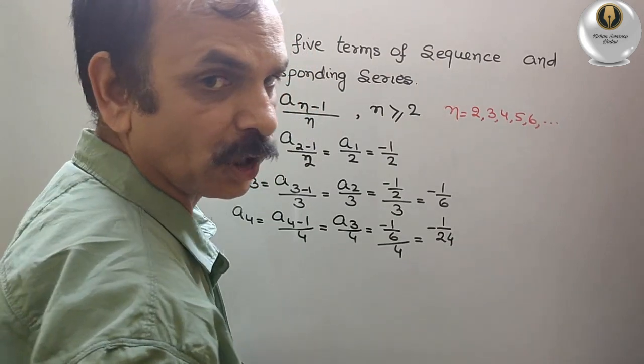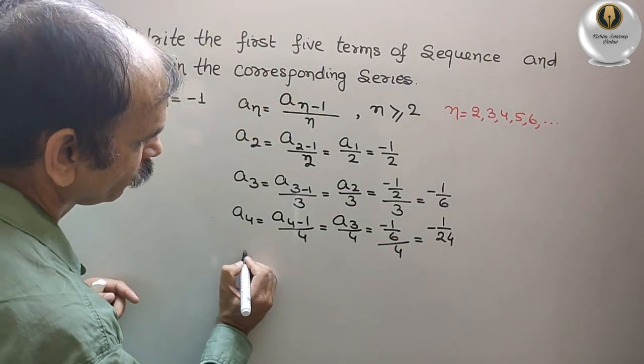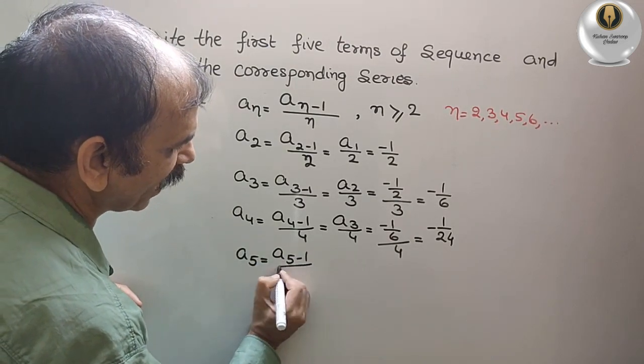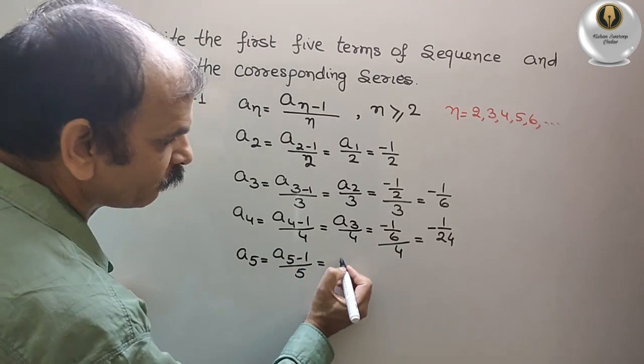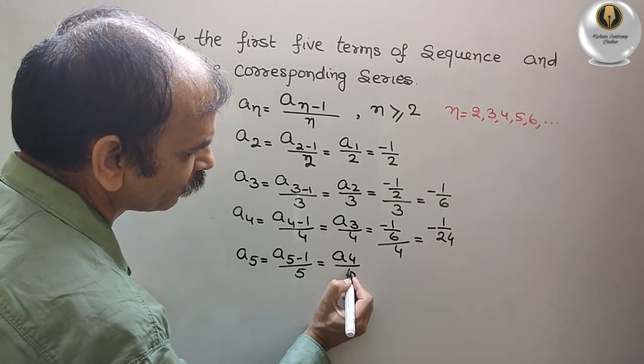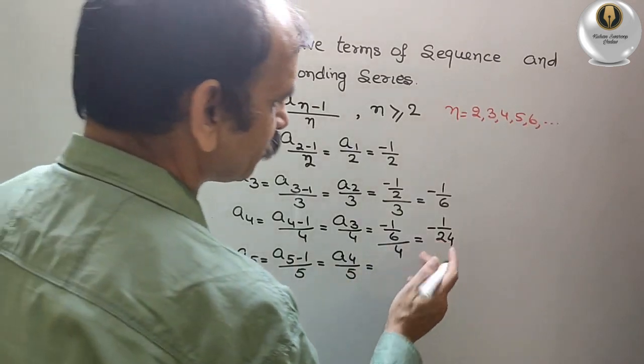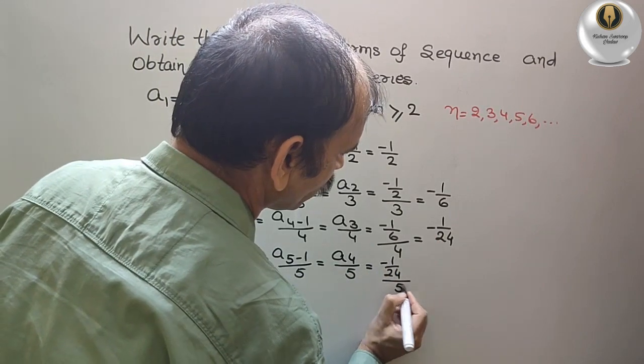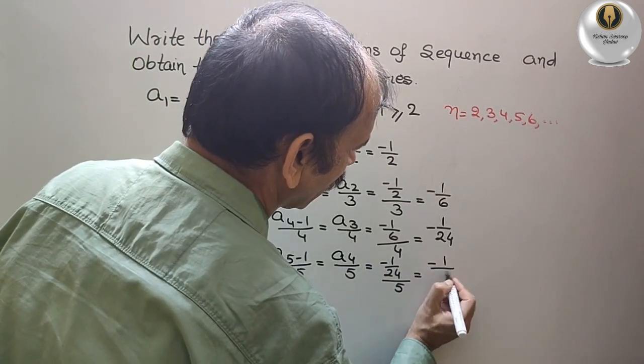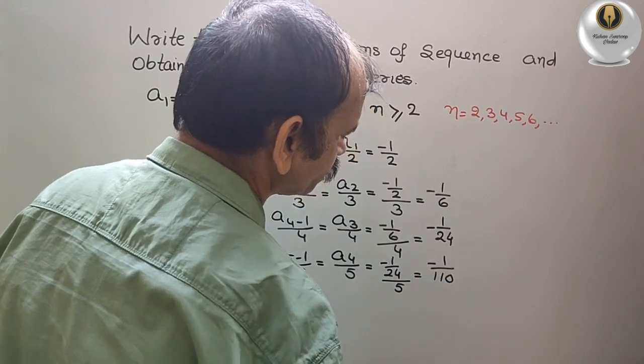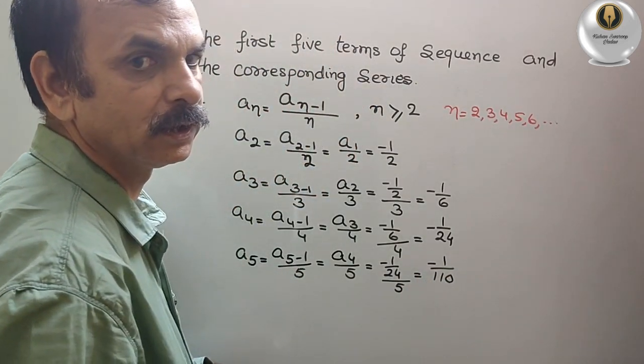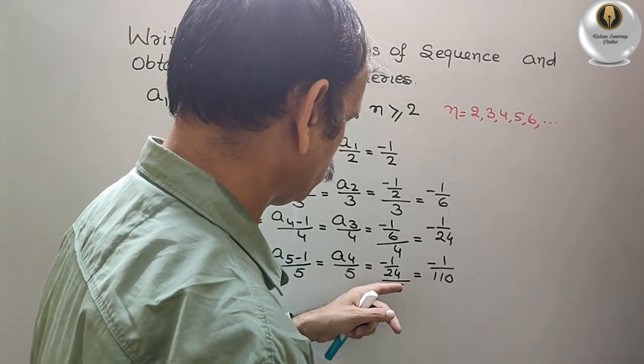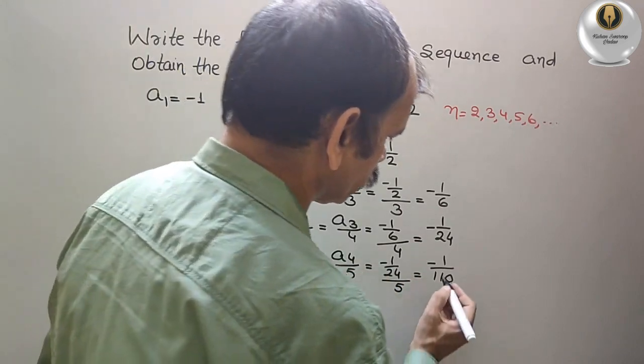Next comes your a5. That is equal to a5 minus 1 by 5. This is equal to a4 by 5. So we know a4, that is minus 1 by 24, by 5. That is equal to minus 1 by 120. It is 120.